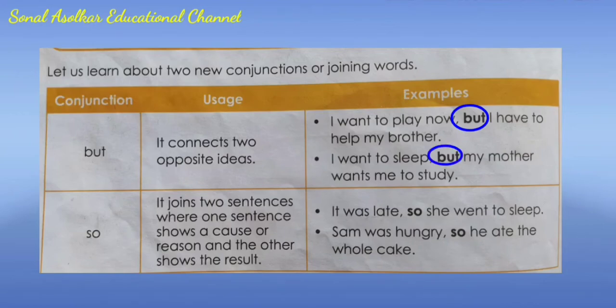The second new conjunction is 'so'. Usage: it joins two sentences where one sentence shows a cause or reason and the other shows the result. Examples: It was late so she went to sleep.